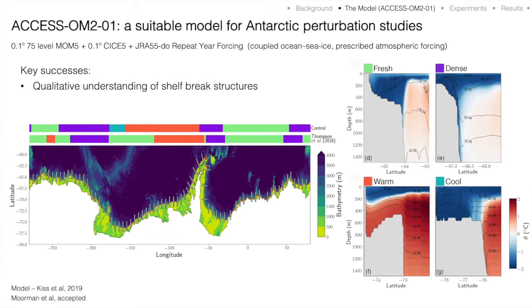The model has a number of key advantages that recommend it for near-Antarctic perturbation studies. The first is that the model does a really good job at representing the different dynamical regimes that occur at the continental shelf margin. I'm showing a comparison with a classification scheme developed by Andy Thompson et al. that splits stretches of the continental shelf margin into different regimes — dominated by the Antarctic slope front, overflow of dense shelf waters, or absence of an Antarctic slope front — and the control simulation replicates those patterns well.